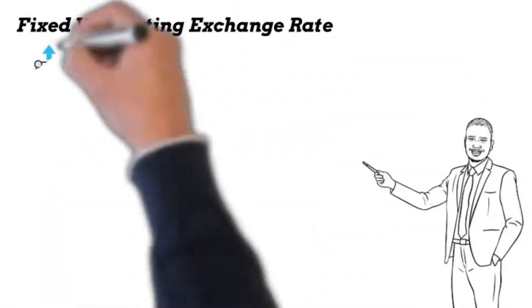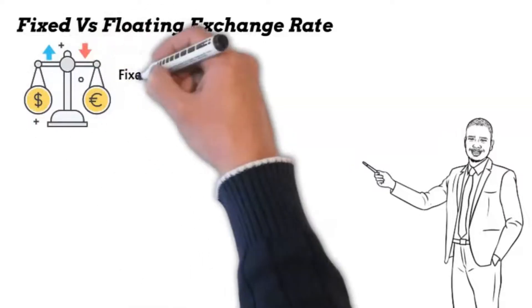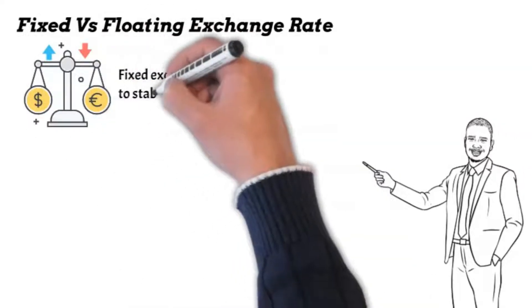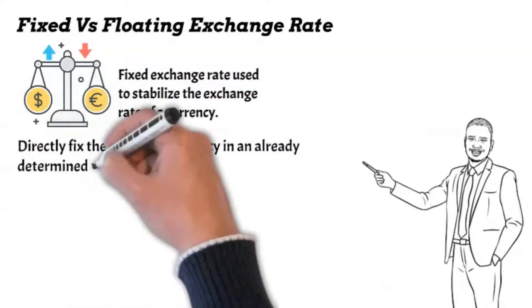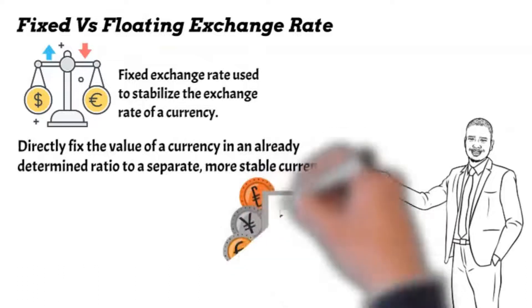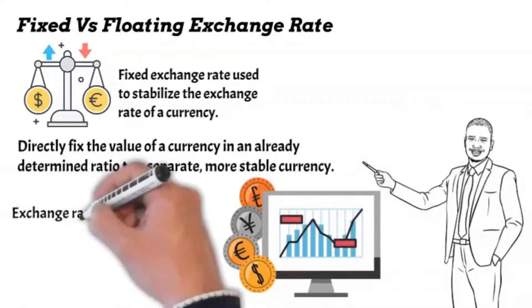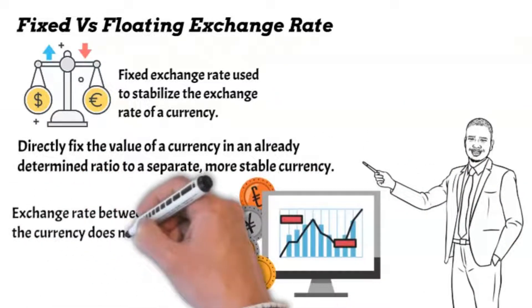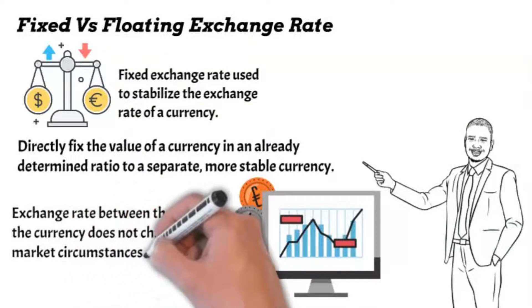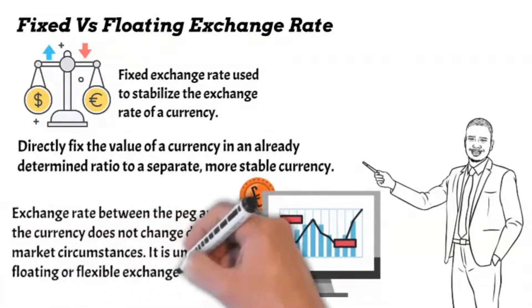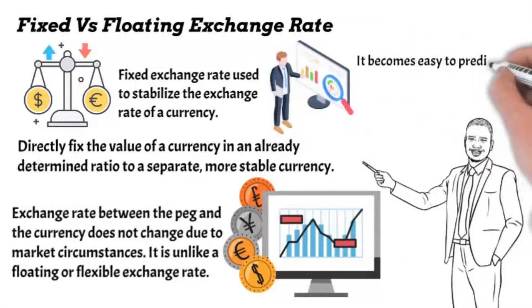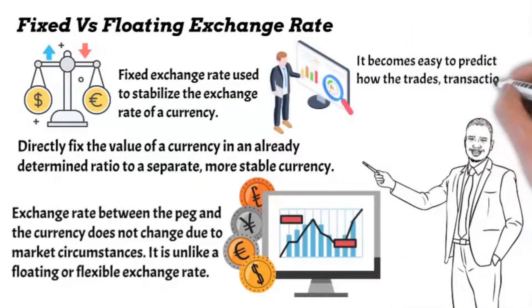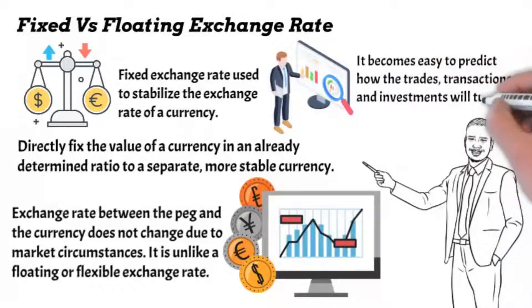Fixed vs Floating Exchange Rate. A fixed exchange rate is used to stabilize the exchange rate of a currency. This stabilization is possible because one can directly fix the value of a currency in an already determined ratio to a separate, more stable currency, which is also prevalent internationally. The exchange rate between the peg and the currency does not change due to market circumstances, unlike a floating or flexible exchange rate. This makes it easy to predict how the trades, transactions, and investments will turn out.